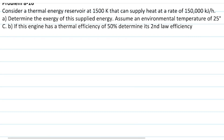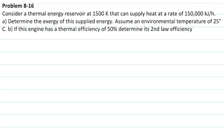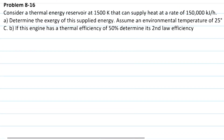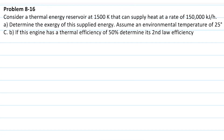So this problem is 8.16 and it reads as follows. Consider a thermal reservoir at 1500 Kelvin that can supply heat at a rate of 150,000 kilojoules per hour. Part A: Determine the exergy of the supplied energy, assuming an environment temperature of 25 degrees Celsius. Part B: If the engine has a thermal efficiency of 50 percent, determine its second law efficiency.